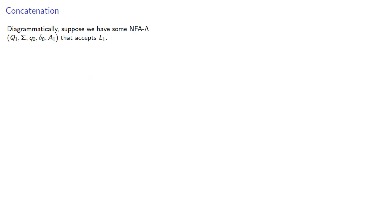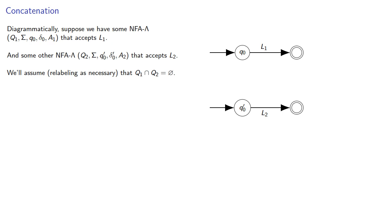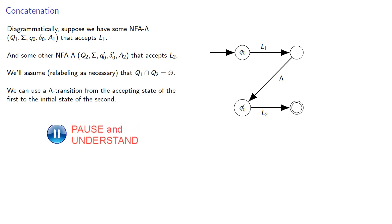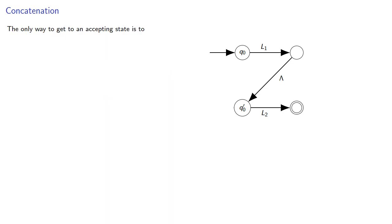Diagrammatically, suppose we have some NFA lambda that accepts L1, and some other NFA lambda that accepts L2. We'll assume, relabeling as necessary, that our set of states is disjoint, and we can use a lambda transition to go from the accepting state of the first to the initial state of the second. And this gives us an NFA lambda.